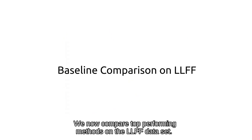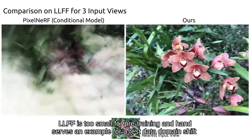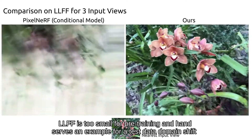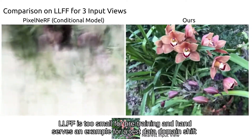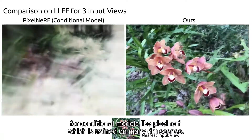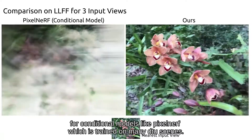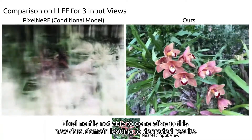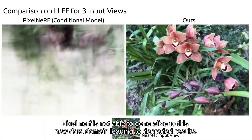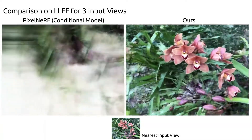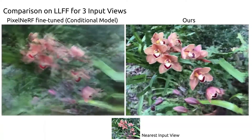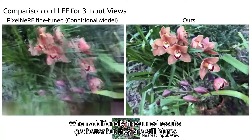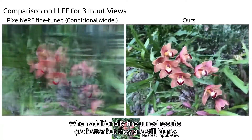We now compare top-performing methods on the LLFF dataset. LLFF is too small for pre-training and hence serves as an example of a test data domain shift for conditional models like Pixel NeRF, which is trained on many DTU scenes. Pixel NeRF is not able to generalize to this new data domain, leading to degraded results. When additionally fine-tuned, results get better but they are still blurry.